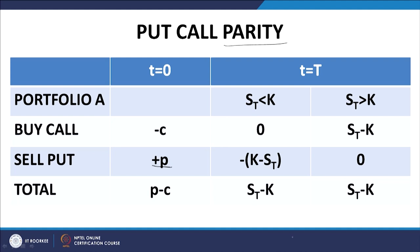Portfolio A comprises a long call — you are buying a call option, paying a price small c — and you sell a put, that is you are shorting a put option. Since you are shorting a put option, it is a cash inflow for you — you get plus p, small p because it is European options. The entire spectrum of stock prices runs from 0 to infinity. We split this entire spectrum into two parts by the exercise price K: the region from 0 to K and the region from K to infinity.